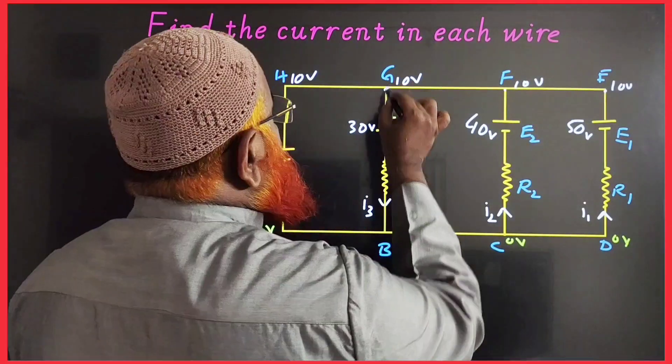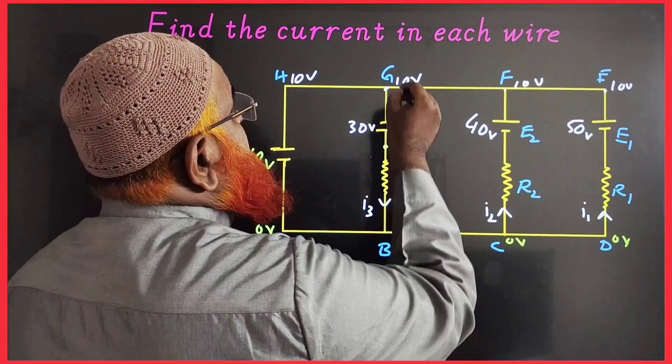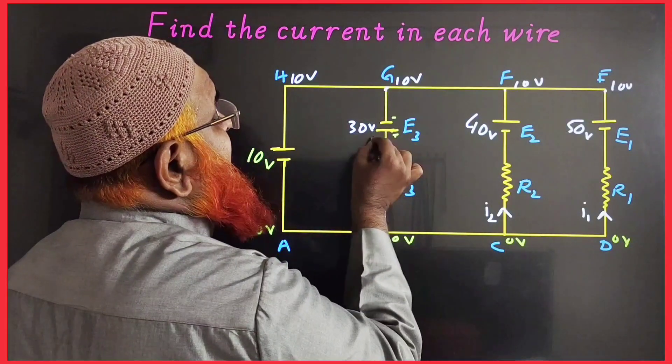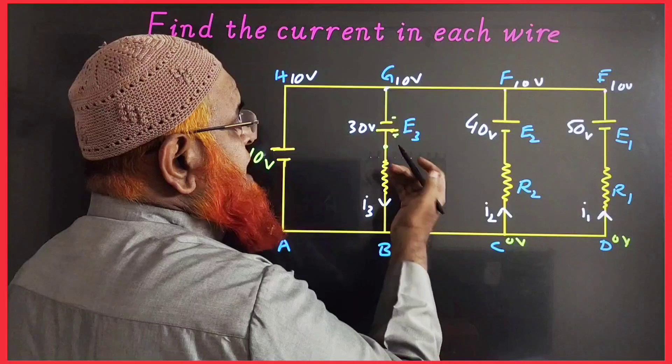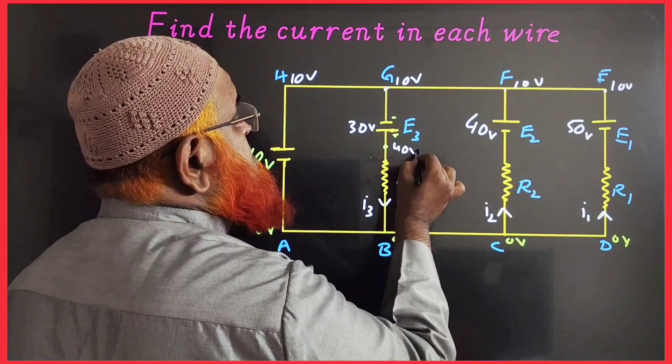Let us take from here to here. You are coming from this side. From negative to positive means you have to add, lower to higher means you have to add. That means 10 plus 30 equals 40 volts here.